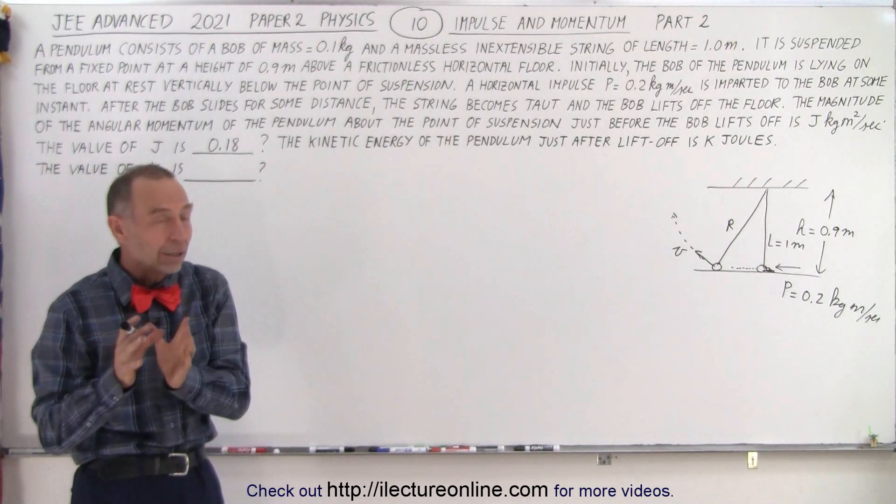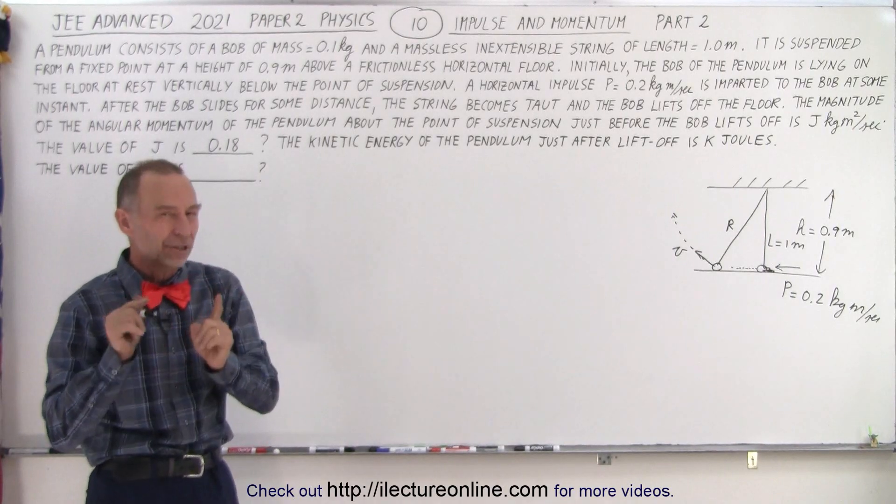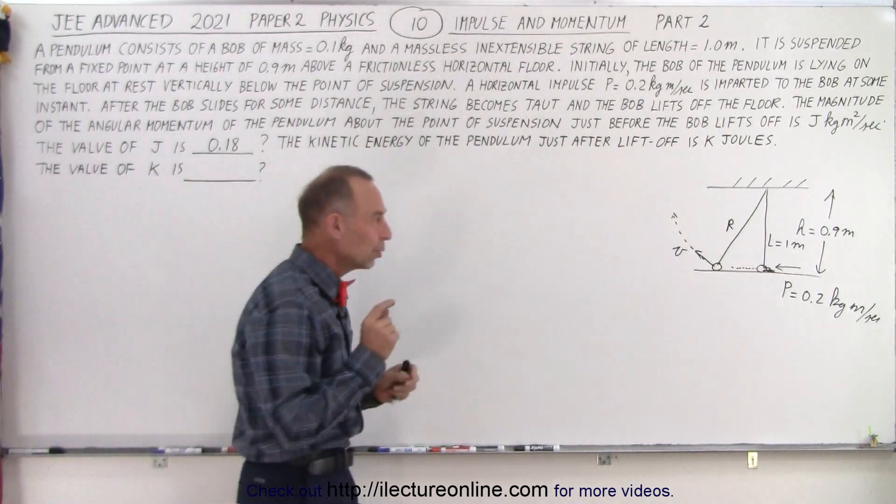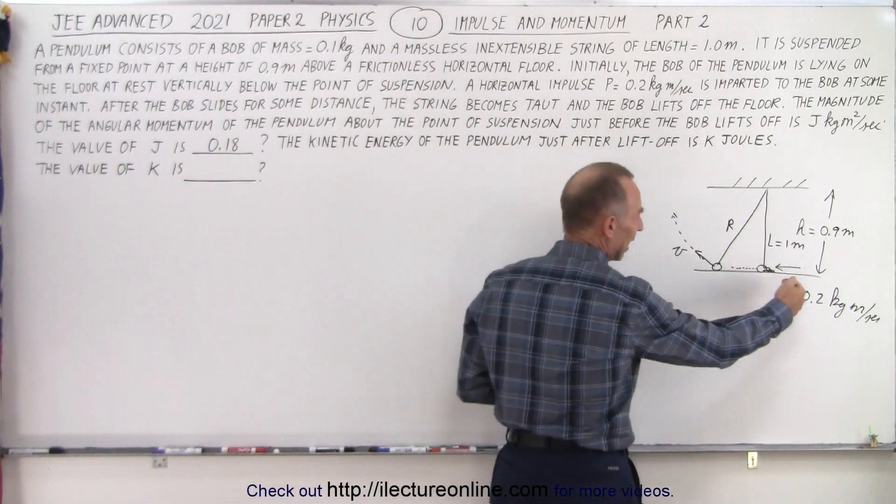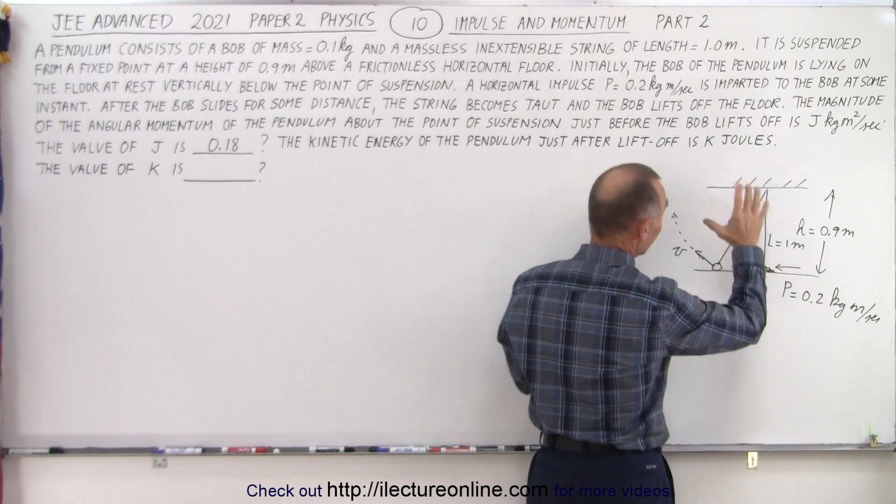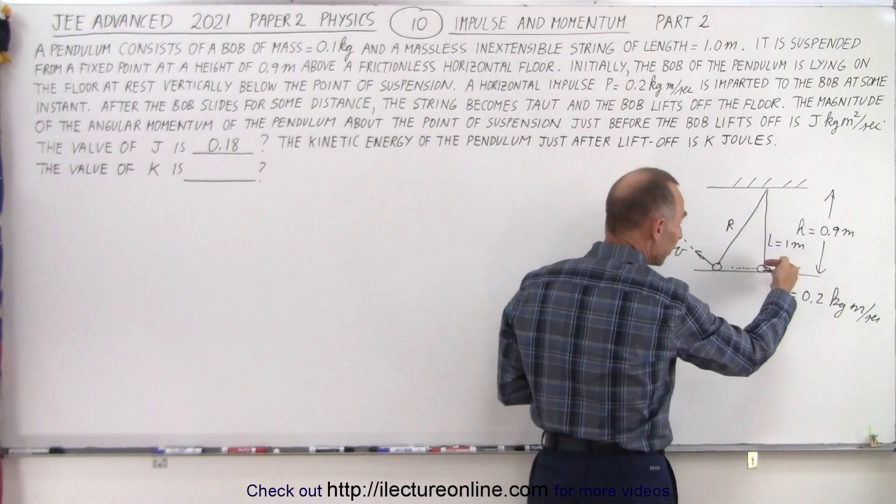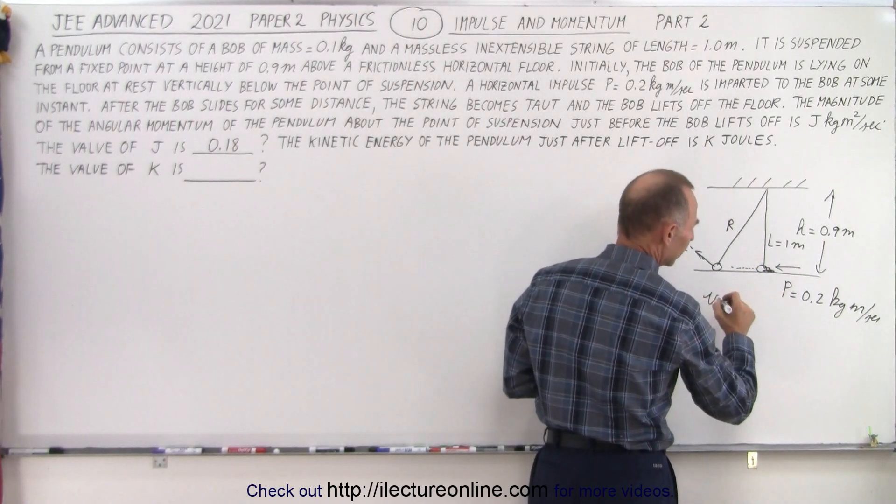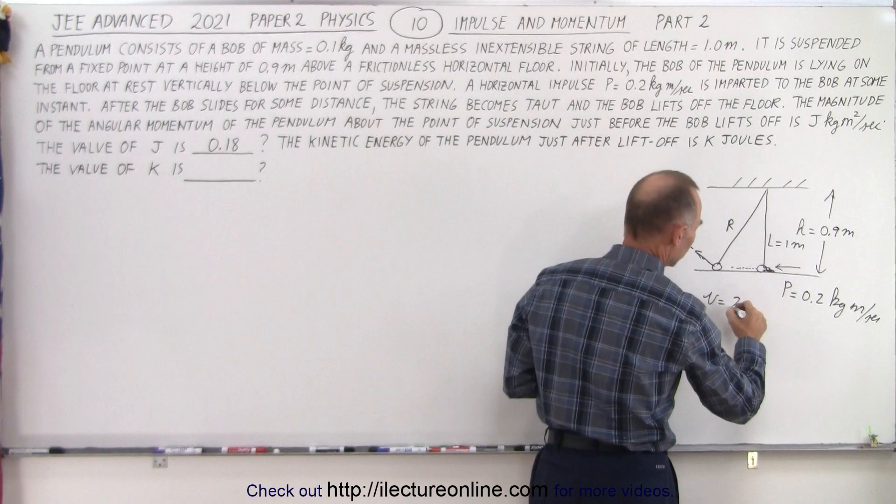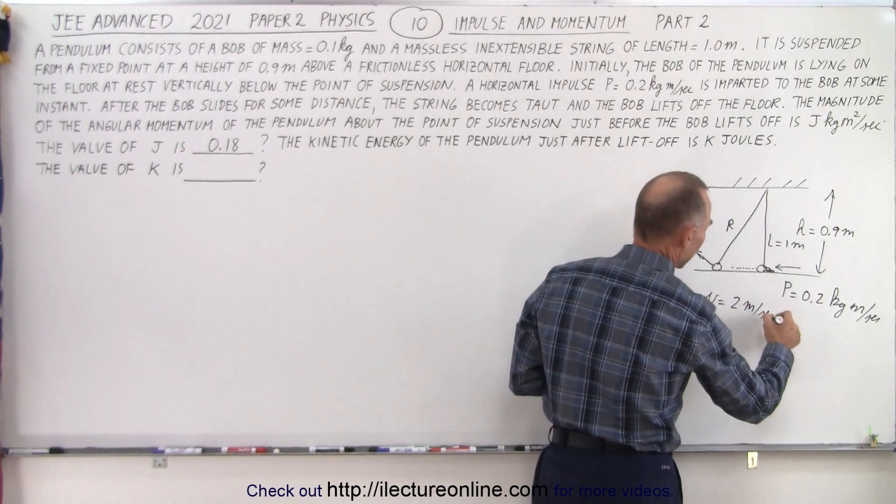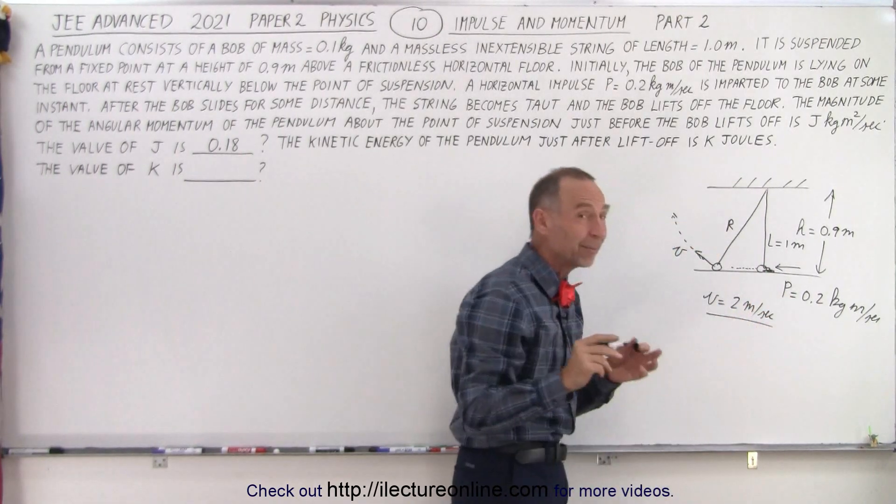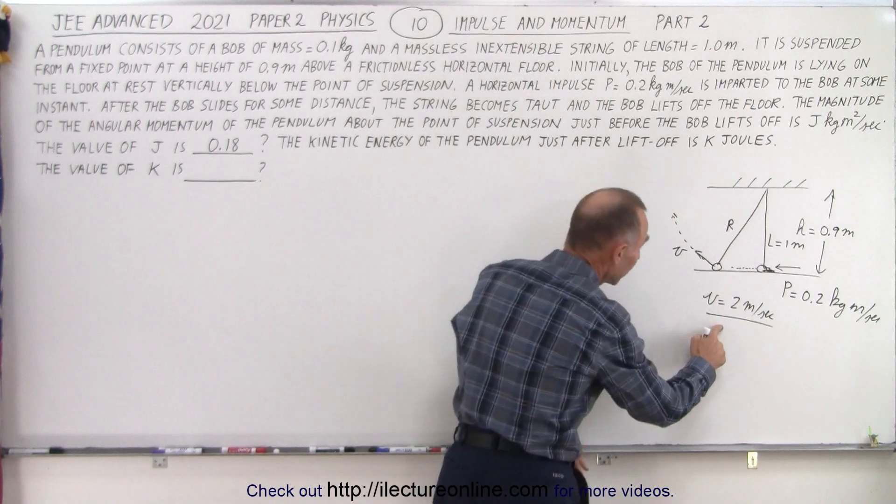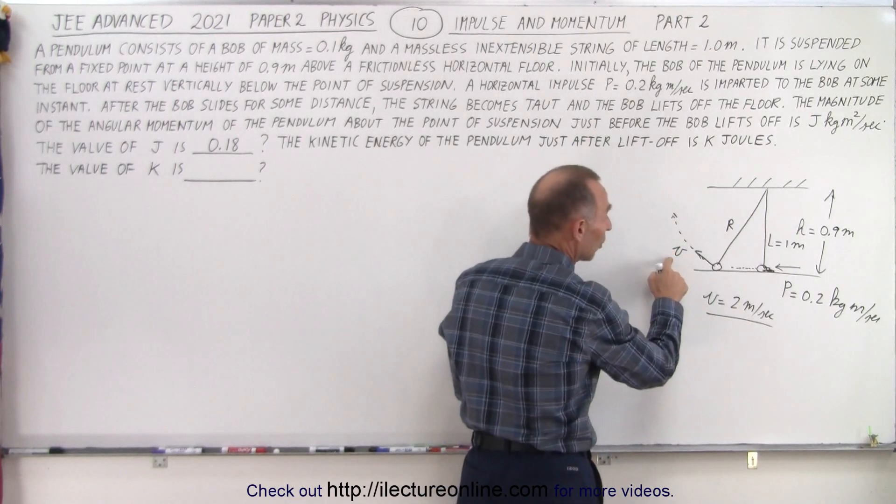Now here, let me tell you why you may make a mistake if you're not careful. You realize in the previous video that in part one, when the impulse was imparted on the object, the velocity was equal to 2 meters per second. And you may make the mistake of thinking that will also be the velocity at this point, but it's not.